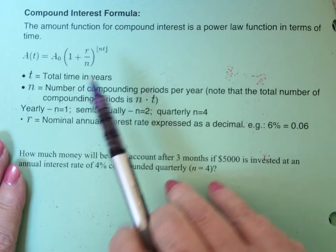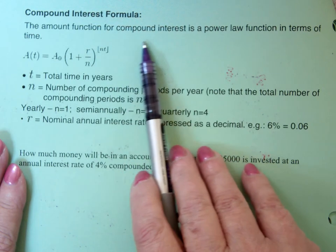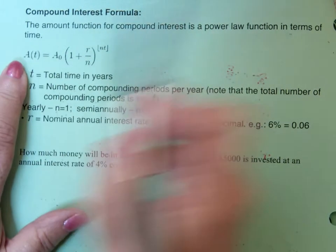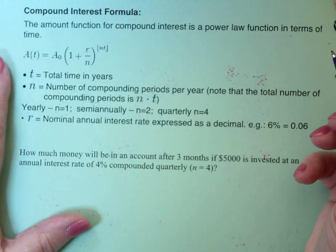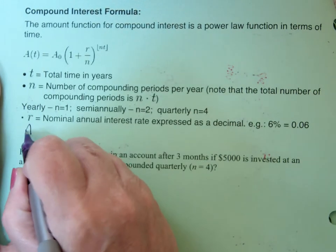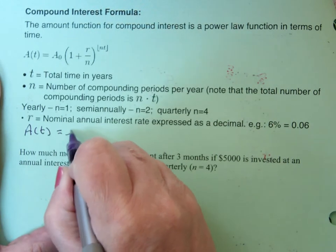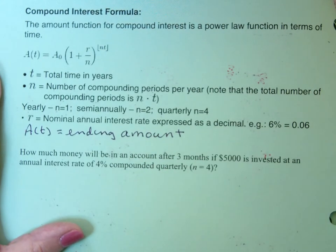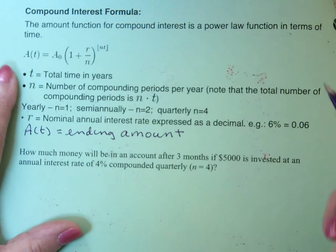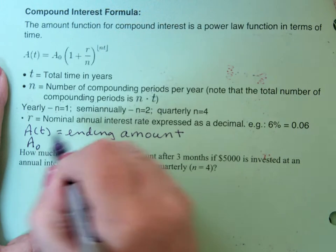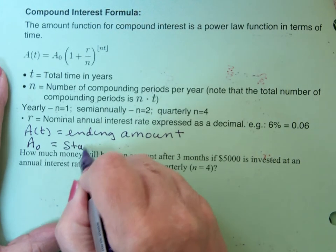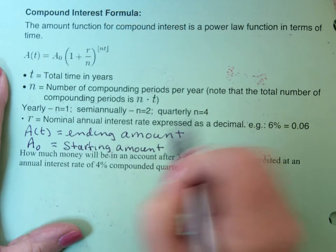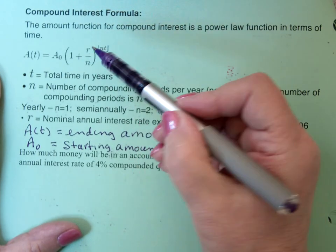Compound interest formula. It says the amount function for compound interest is a power law function in terms of time. So here are my variables. A of T. A of T is the ending amount. So A of T is the ending amount. And A0 is the beginning amount. It's what you start out with.